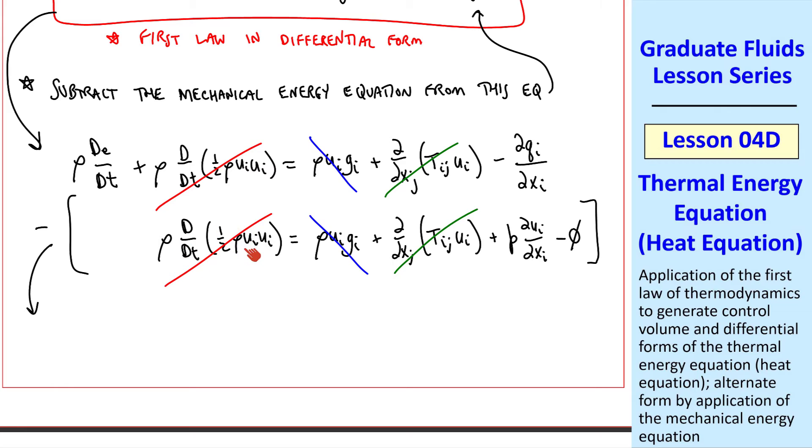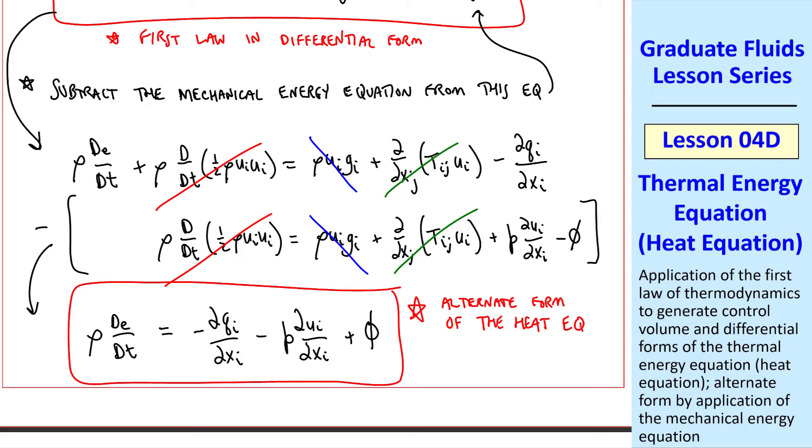We notice that several of these terms are identical. These two cancel, these two cancel, and these two cancel, since there's a negative sign in front of this whole grouping. By the way, the left-hand side of this mechanical energy equation is in non-conservative form. The only terms remaining are rho dE/dt equal negative del qi del xi minus P del ui del xi plus phi. This is an alternate form of the heat equation for a Newtonian fluid, which is how we got these terms previously. Now you can see why I left Tij as it was in the mechanical energy equation because in foresight, I knew it would cancel out. This is a form of the energy equation that we'll use a lot.